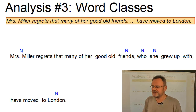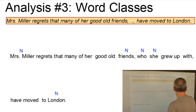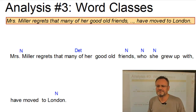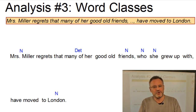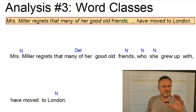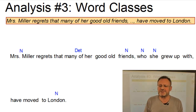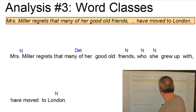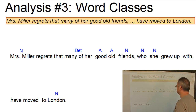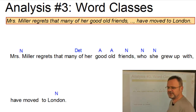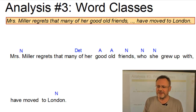One of them is preceded by a complex determiner, 'many of her', which we could break down further, but to avoid debates about determiners, pre-determiners, post-determiners, and determiner phrases we leave it as one unit here. Then we find two adjectives: good and old. We will see what to do with them later.